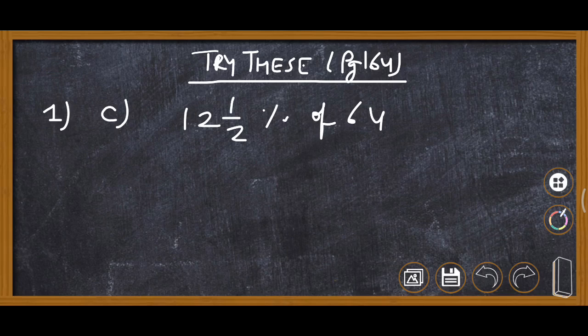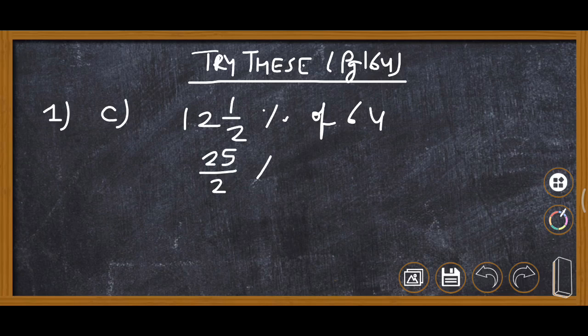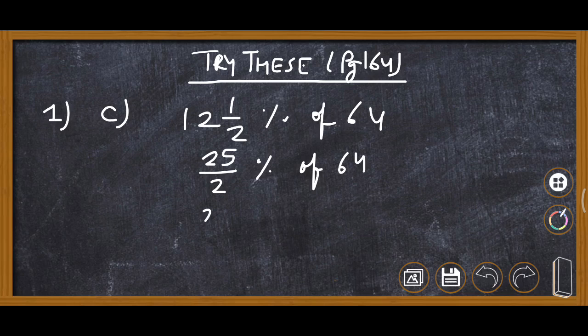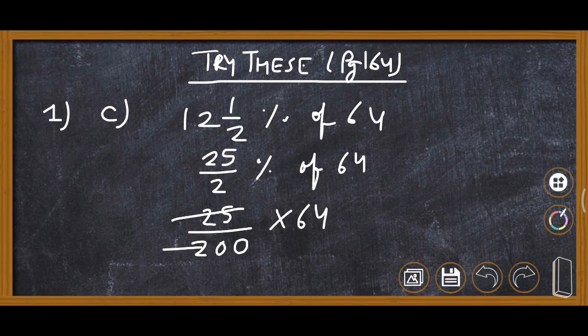Now here we are finding 12 whole 1 upon 2 percent of 64. First of all it is given 12 whole 1 upon 2, so we are converting it to improper: 12 2s are 24 and 1, 25. So it will be written as 25 upon 2 percent of 64. Then 25 upon 200 multiply 64.